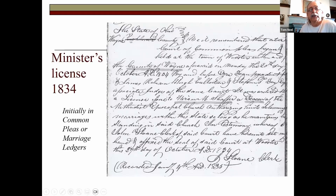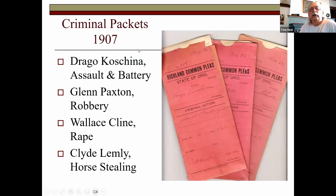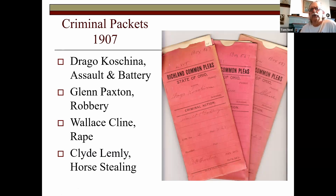A minister's license: I mentioned they started in Common Pleas ledgers and went to probate court in 1851. Here we have Hiram Schaefer, a deacon of the Methodist Episcopal Church, who originally got his minister's license in Worcester, Wayne County in 1834, and is now applying in Richland County to perform marriages there also. Criminal records from 1907 show that if court cases are still in their packets in Common Pleas, there's often a color scheme. In Richland County, criminal cases were in red and civil cases were in blue. You'd find assault and battery, robbery, rape, horse stealing — all kinds of things with details inside.